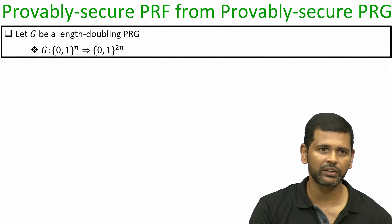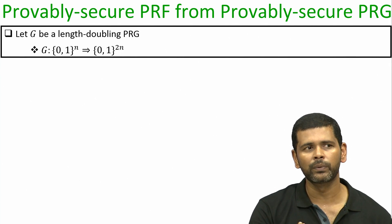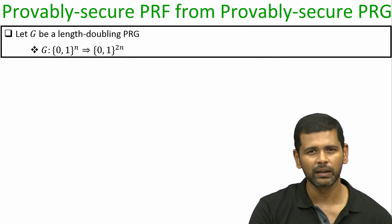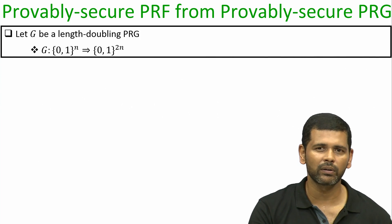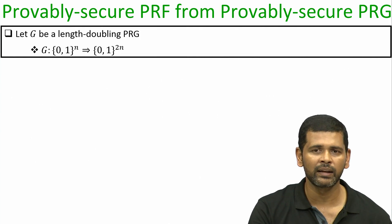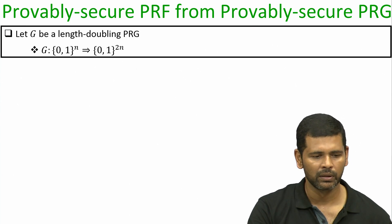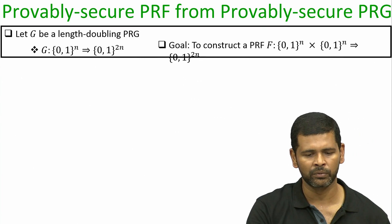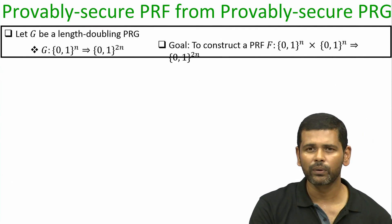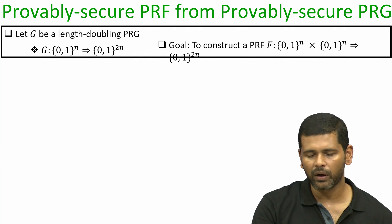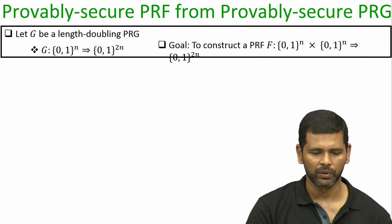This can be constructed in a provably secure way from one-way functions using the Goldreich-Levin construction, assuming that hard-core predicates exist. We expand the input of the PRG by 1 bit using a hard-core predicate and then do a serial composition of that PRG a polynomial number of times to expand the length by any polynomial amount. I assume I have such a length-doubling PRG, and my goal is to construct a pseudo-random function taking an n-bit key, n-bit block, and giving a 2n-bit output.